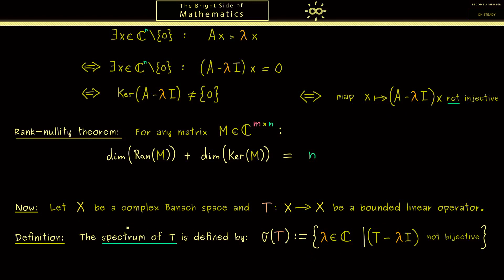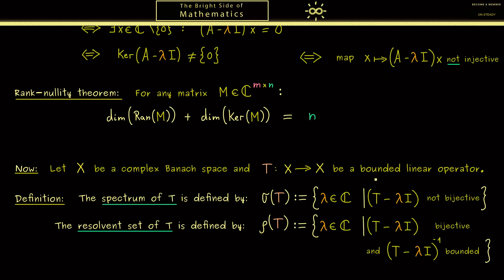However, for the infinite-dimensional case we will see that we can split up this set into three parts. Before we do that, let's also define the so-called resolvent set of T. And this one is denoted by a lowercase ρ.